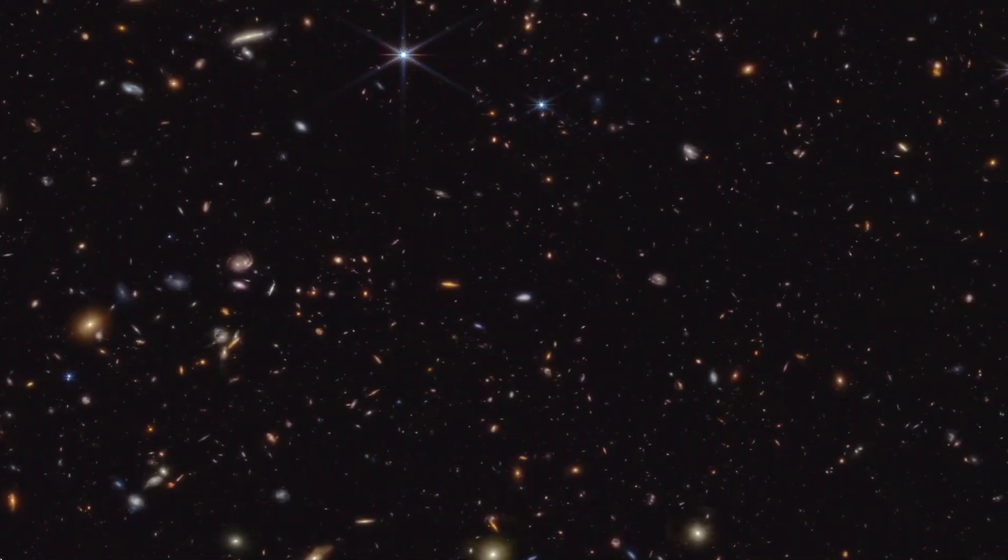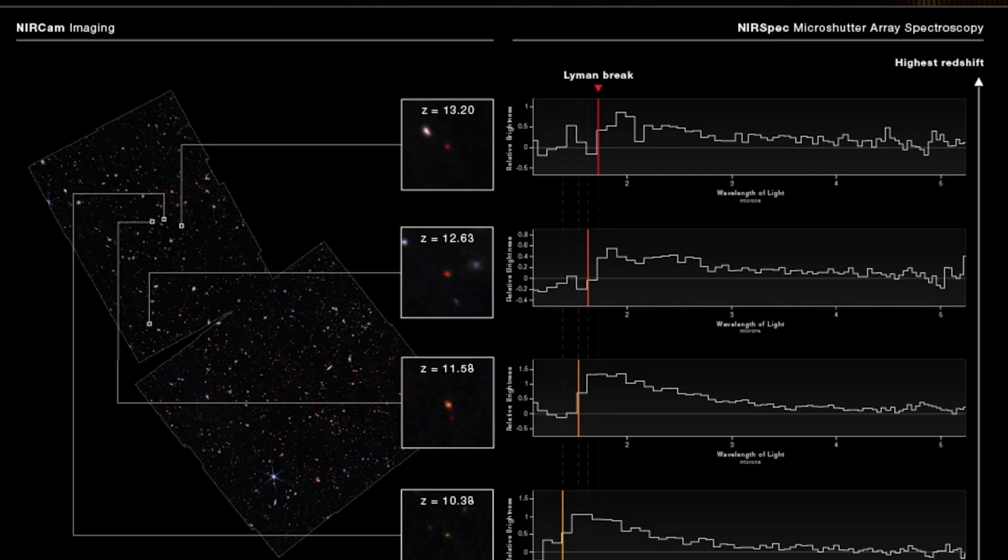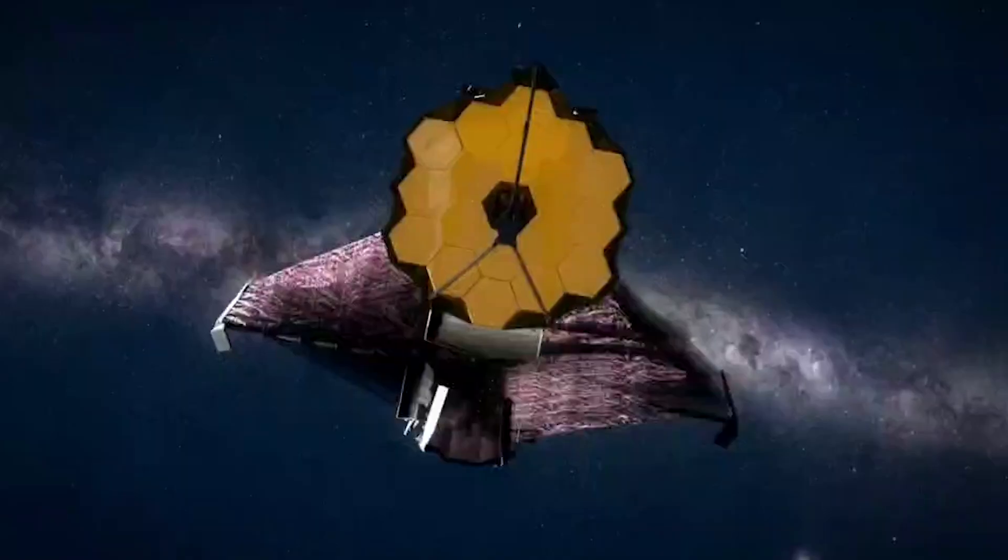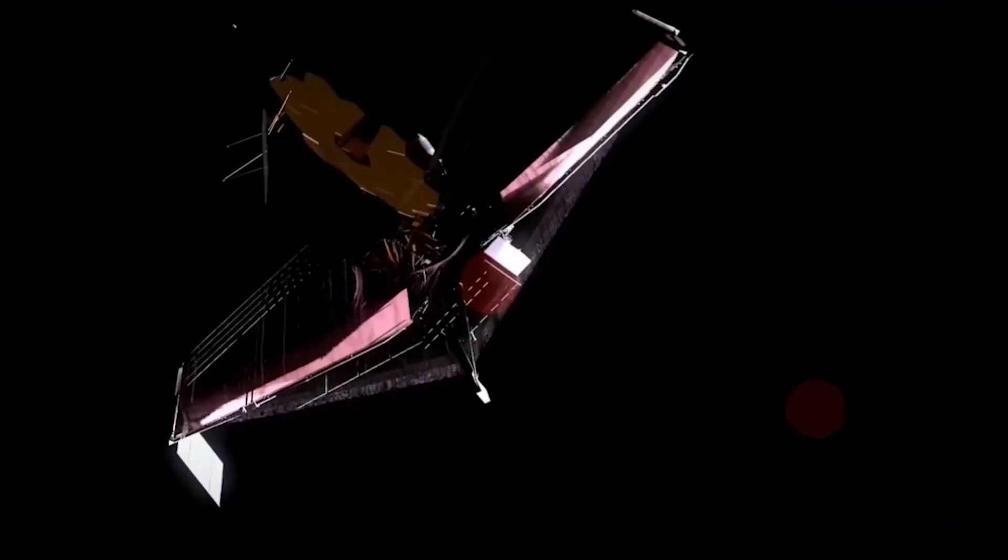JADES uses the infrared capability of James Webb to observe distant objects whose light has been redshifted by the expansion of the universe. It has found galaxies with very high redshifts, demonstrating the effectiveness of the telescope in studying the early universe.